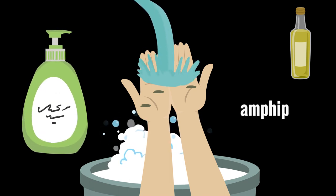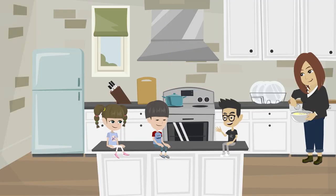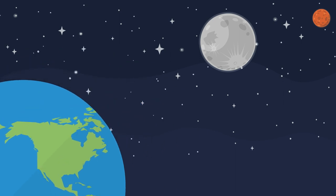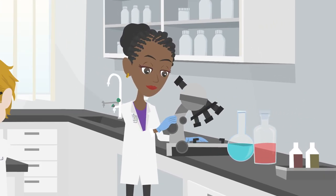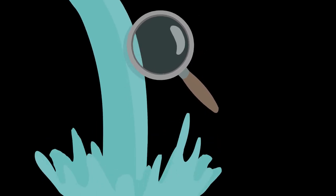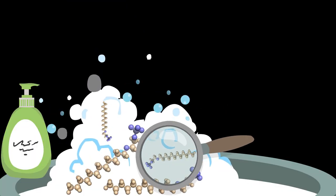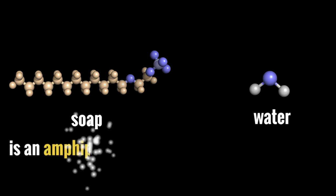Soap is made of amphiphilic molecules and can remove all types of dirt from your hands while you wash. What are molecules? Molecules are tiny assemblies of atoms. Everything around us, everything in the world and the universe is made of atoms and molecules. You can only see molecules if you zoom way in. Look at water molecules here. And look at soap molecules. The properties of molecules determine the properties of the substances we interact with. We said that soap was made of amphiphilic molecules.